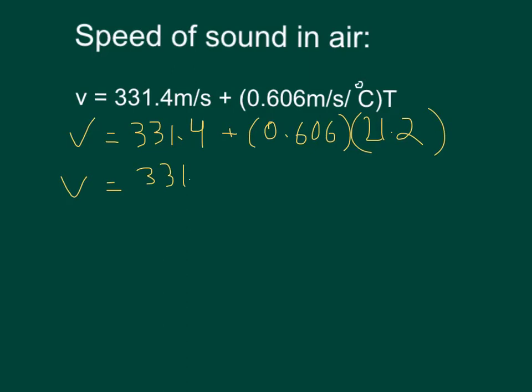So now we can get out our calculator. 331.4 plus, now 0.606 times 21.2 is 12.847. And 331.4 plus 12.847 is 344.247, and that's in meters per second.